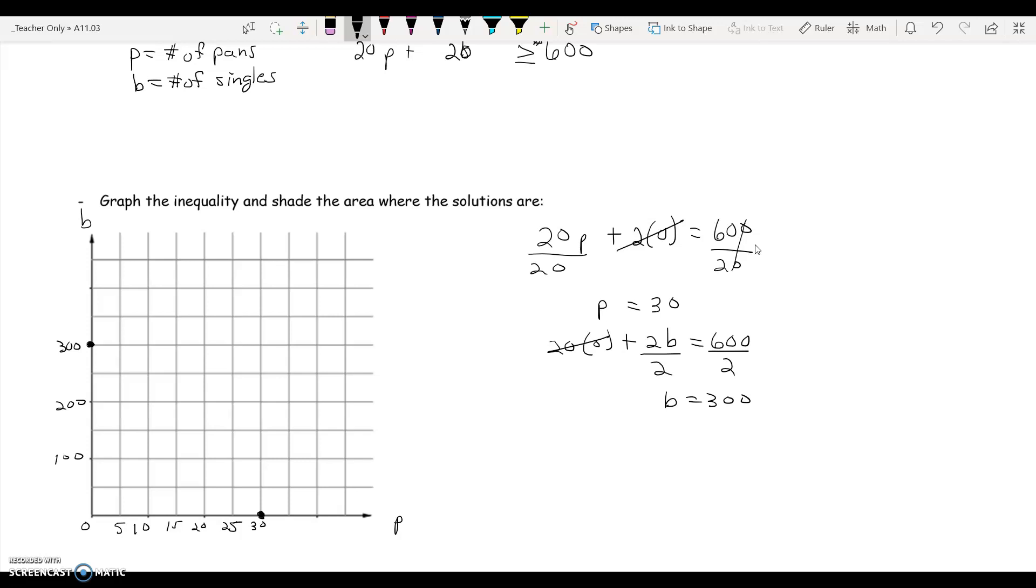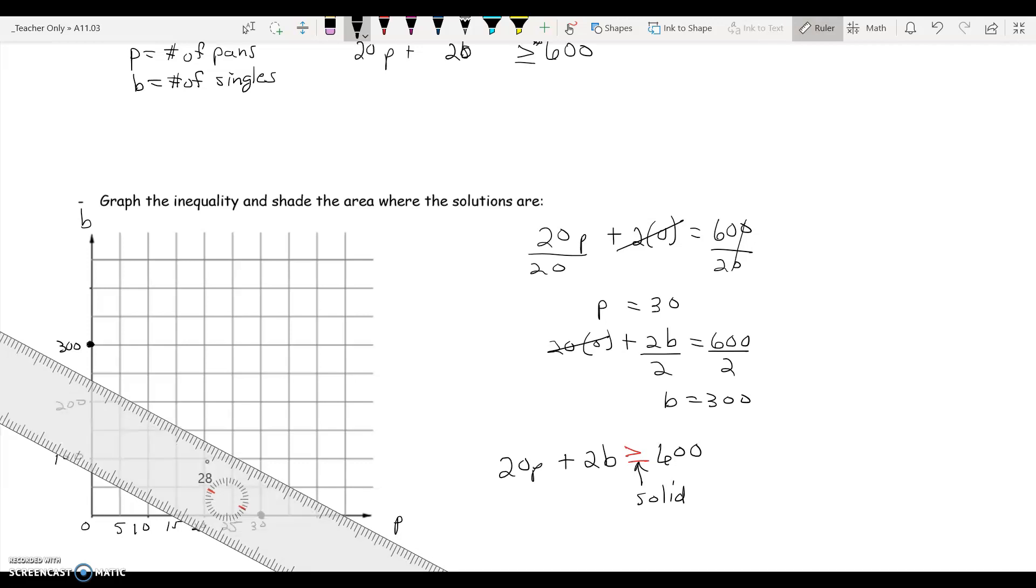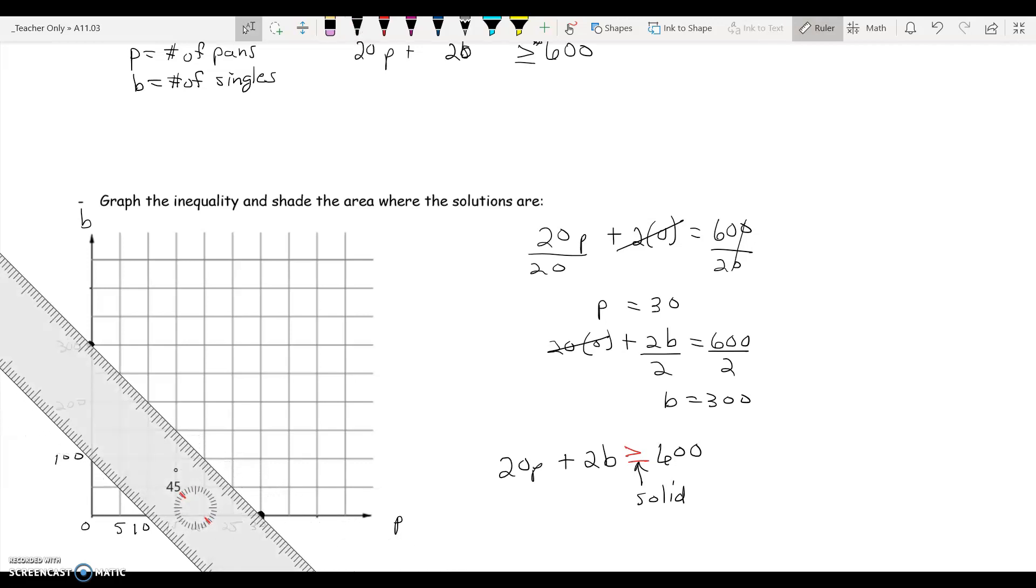So now we're going to graph a line from one intercept to the other. And since this is an inequality with an equal sign in it, because this is 20P plus 2B is greater than or equal to 600, this tells me it's going to be a solid line. Let me grab my ruler over here, line that up. That seems to be pretty good right there. Draw my line.